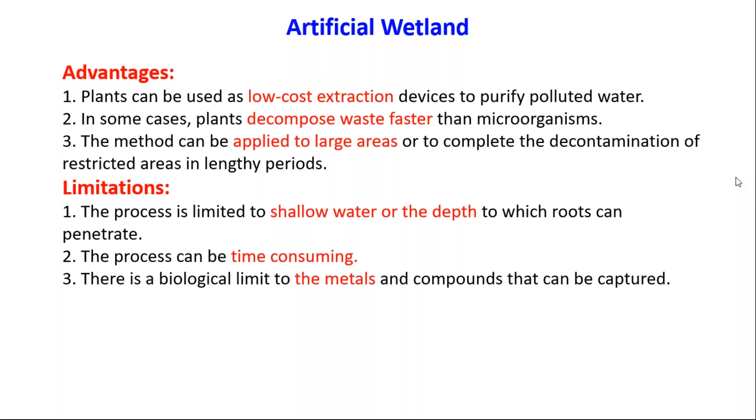Advantages of artificial wetlands include: plants can be used as low-cost extraction devices compared to industrial equipment. In some cases, plants decompose waste faster than microorganisms — where bacteria would naturally convert organic matter into waste and CO2, these plants can do it faster. The method can also be applied to large areas or used to complete decontamination of restricted areas over lengthy periods.